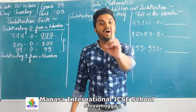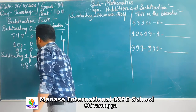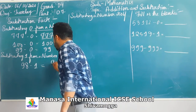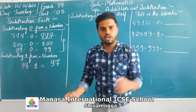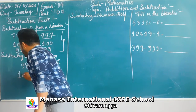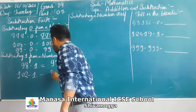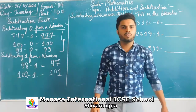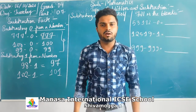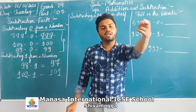The second property is subtracting 1 from a number. For example, 98 minus 1 — you decrease by one and get 97. Similarly, 102 minus 1 gives you 101. Once you subtract one, you will get one less number.